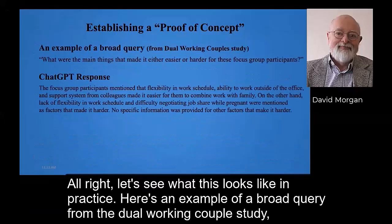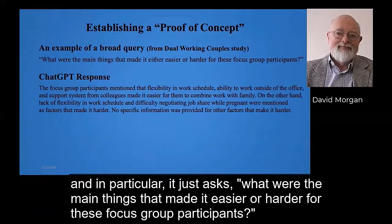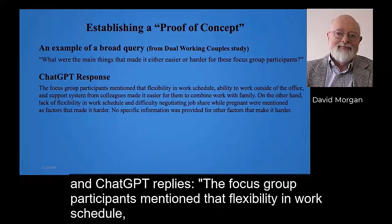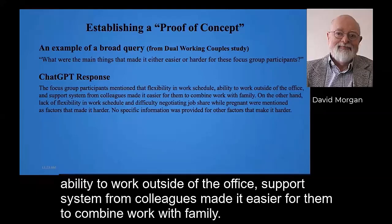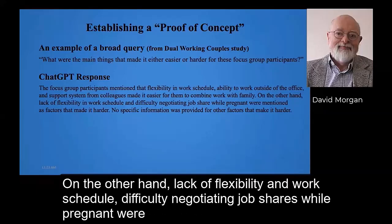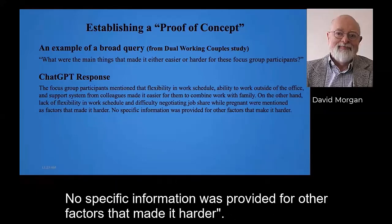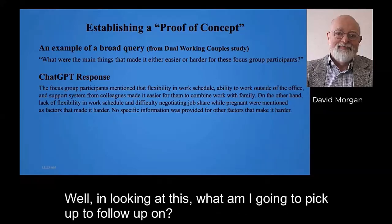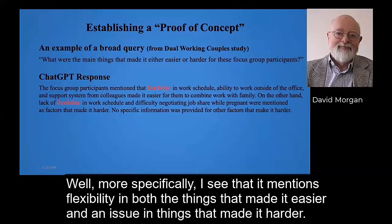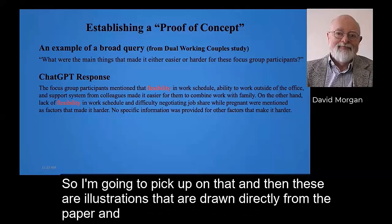Here's an example of a broad query from the dual working couples study: 'What were the main things that made it easier or harder for these focus group participants?' ChatGPT replied that flexibility in work schedules and support from colleagues made it easier, while lack of flexibility and difficulty negotiating job shares while pregnant made it harder. Noticing that flexibility appeared in both categories, I decided to follow up with a more specific question.